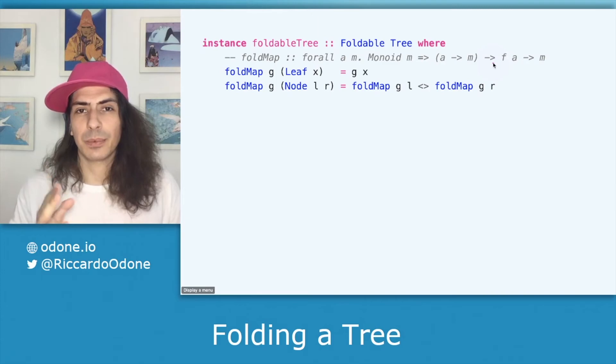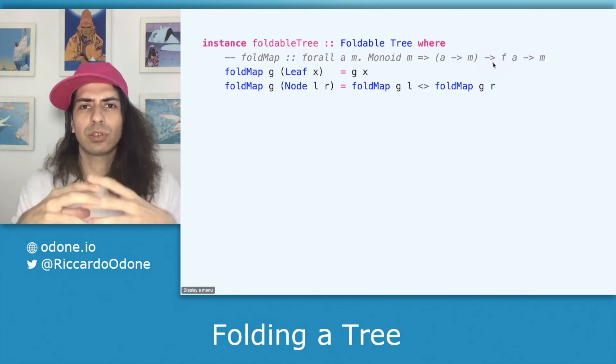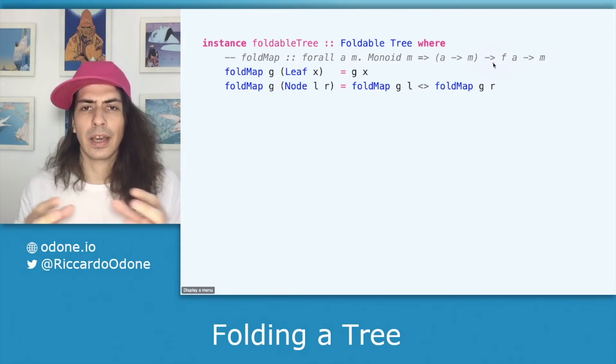So by looking at the type we can more or less understand what's going on here. We take our data structure which is a container of values in our case a tree of characters and we make each value a monoid which means that after everything inside is a monoid we can squash it together into one value.